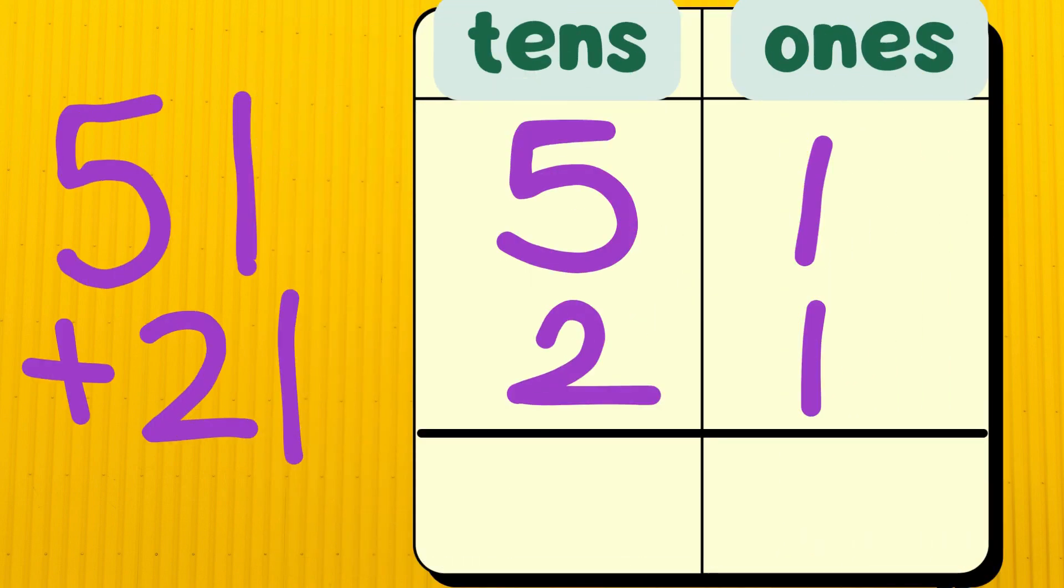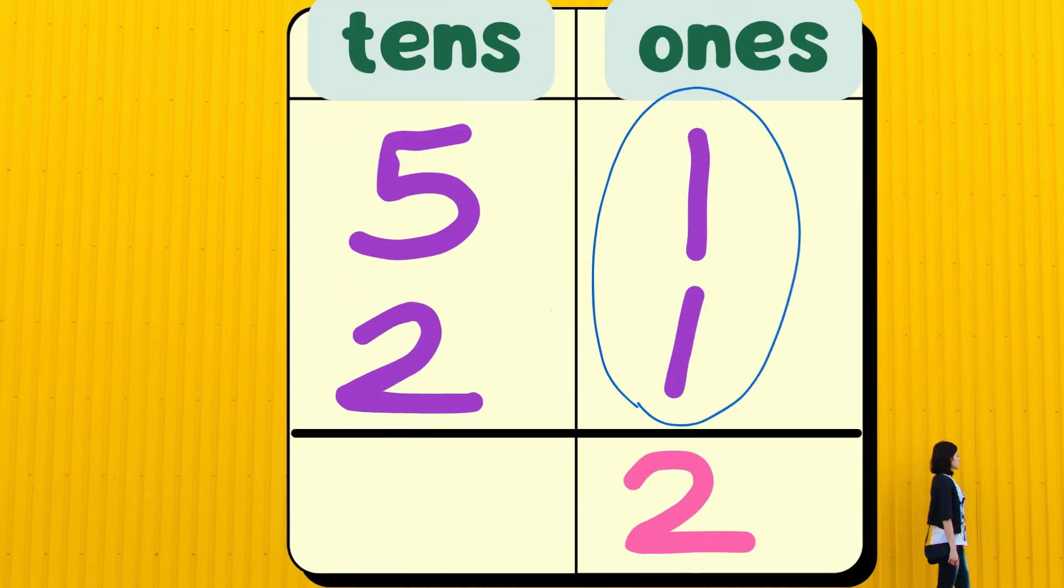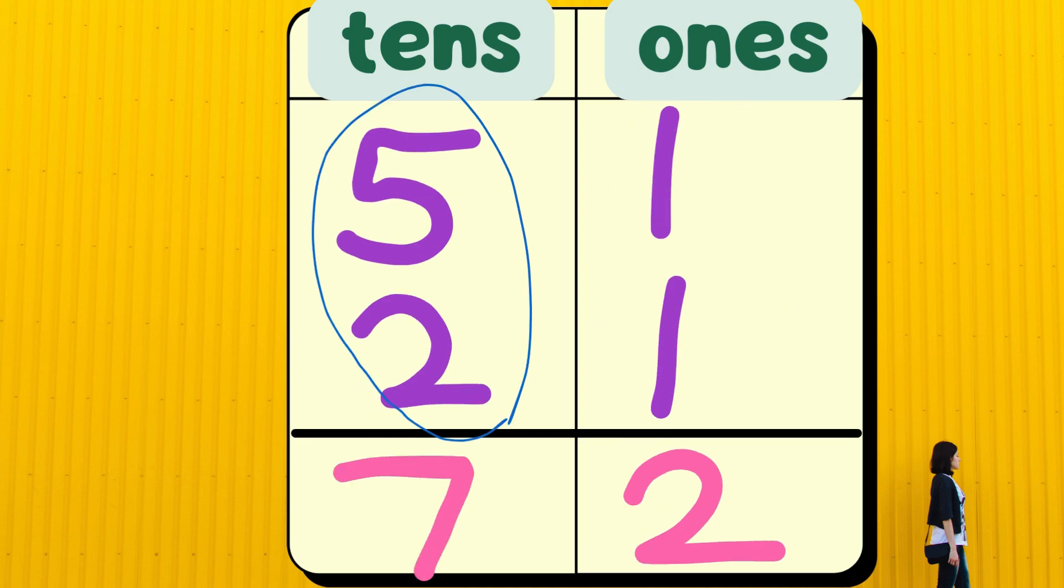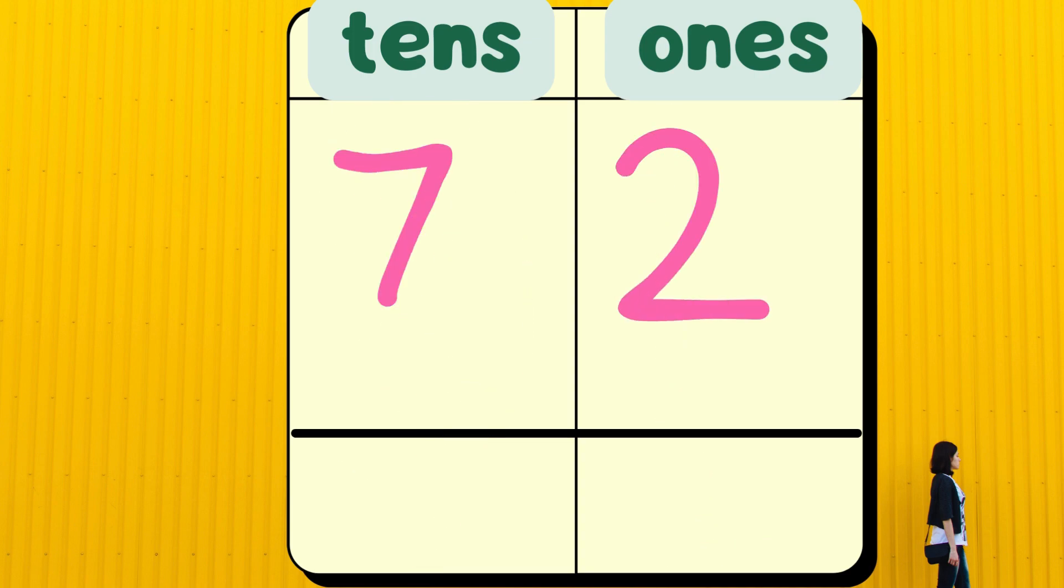Let's look at more examples. Let's add 51 and 21. Write them in base 10 chart first. Add the 1s. 1 plus 1 gives a sum of 2. Next, add the 10s. 5 plus 2 gives a sum of 7. 72 has 7 10s and 2 1s.